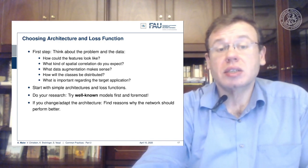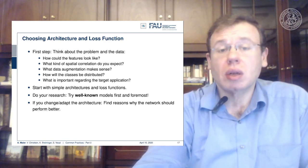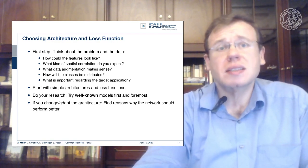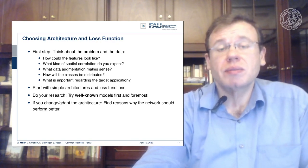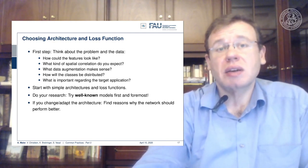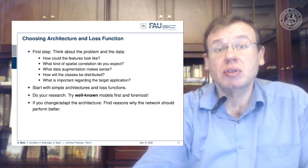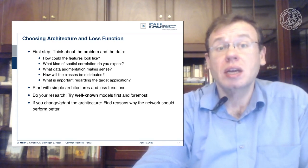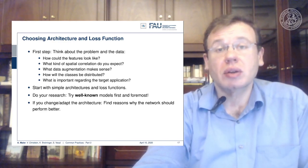Then you start with simple architectures and loss functions, and of course you do your research. Try well-known models first and foremost — they are being published, and there are so many papers out there. There is no need to do everything yourself. One day in the library can save weeks and months of experimentation. In the very good papers, it's not just the scientific results, but they also share source code and sometimes even data. Try to find those papers — this can really help you with your own experimentation.